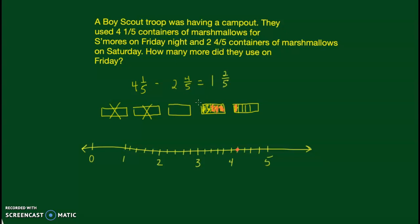I need to take away two and four-fifths. Taking away one whole — one equals five-fifths — moves me back five-fifths to three and one-fifth. Taking away another whole moves me back another five-fifths to two and one-fifth. Then for the fourths — in a different color — I take away four-fifths: one, two, three, four, which lands me at one and two-fifths. So from a starting point of four and one-fifth, subtracting one whole, one whole, and four-fifths gets me to one and two-fifths.